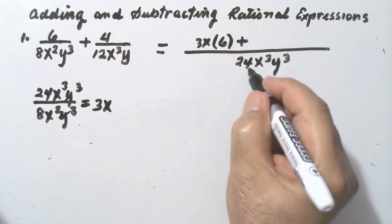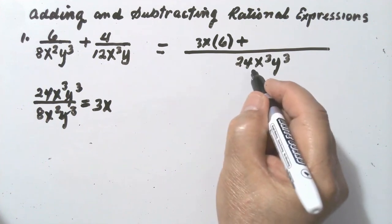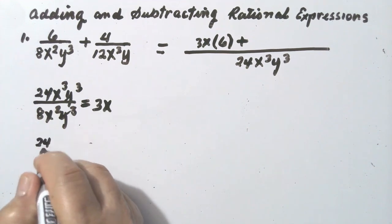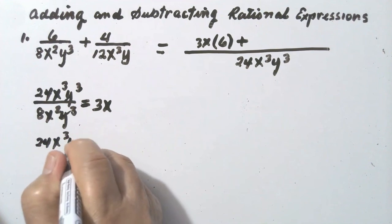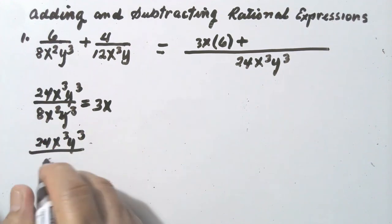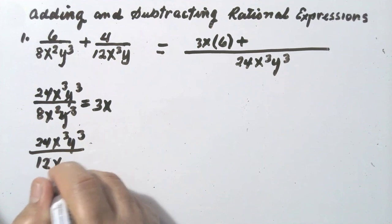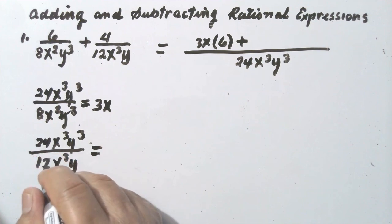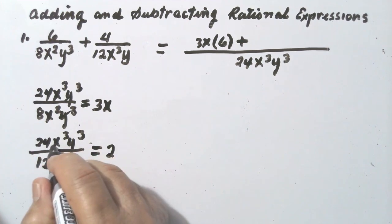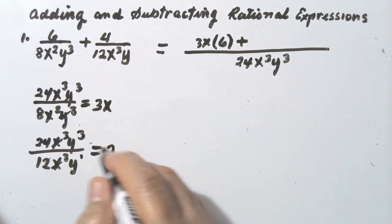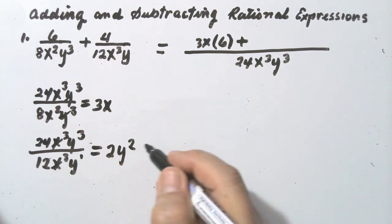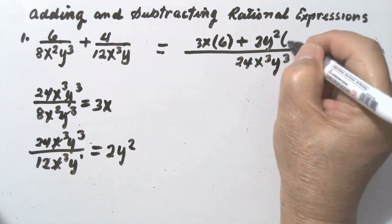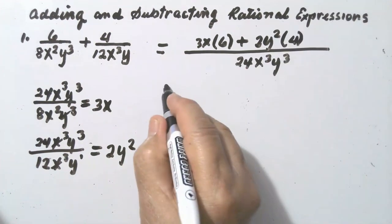Next, divide the least common denominator by 12x cubed y. Let us do it here: 24x cubed y cubed divided by 12x cubed y. 24 divided by 12 is 2. The x cubed cancels. 3 minus 1 gives y squared, so we have 2y squared. Multiply by the numerator 4: that gives 2y squared times 4.